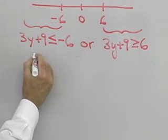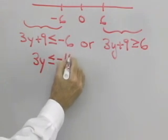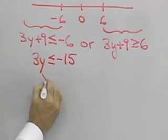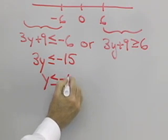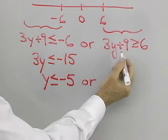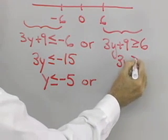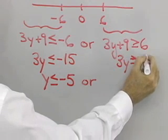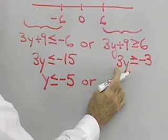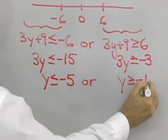Adding negative 9 to both sides of the first inequality, I have 3y less than or equal to negative 15. Multiplying both sides by one third, y is less than or equal to negative 5. For the second inequality, adding negative 9 to both sides gives 3y greater than or equal to negative 3. Multiplying both sides by one third, y is greater than or equal to negative 1.